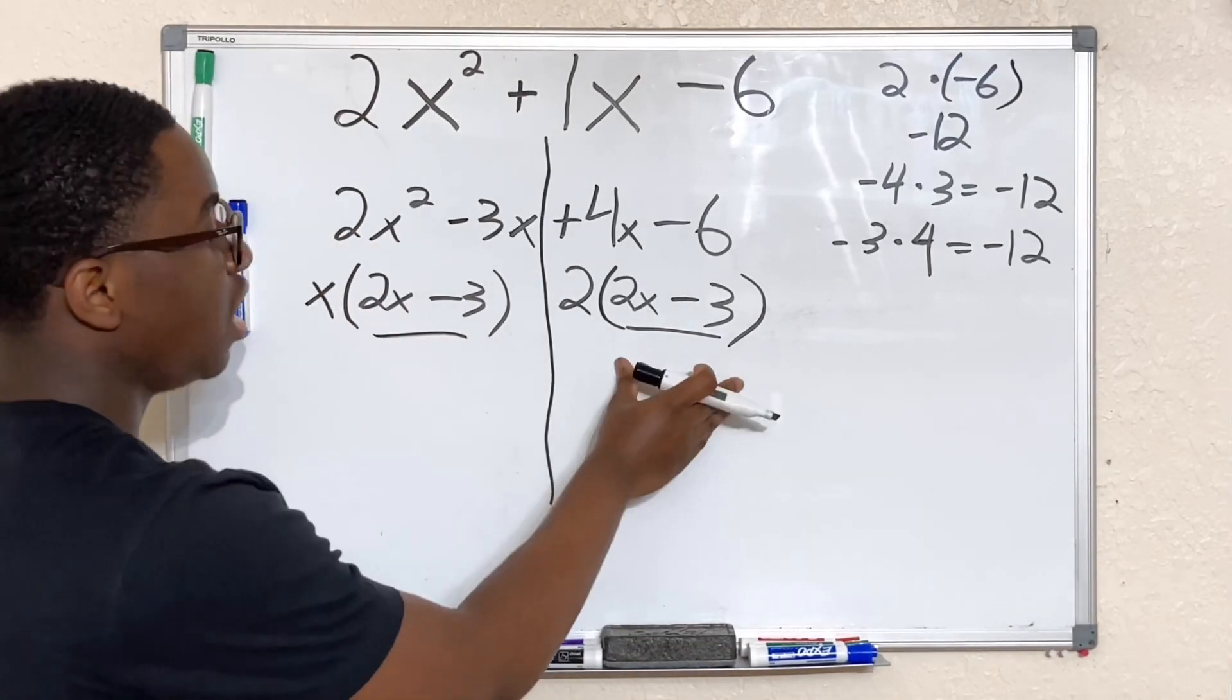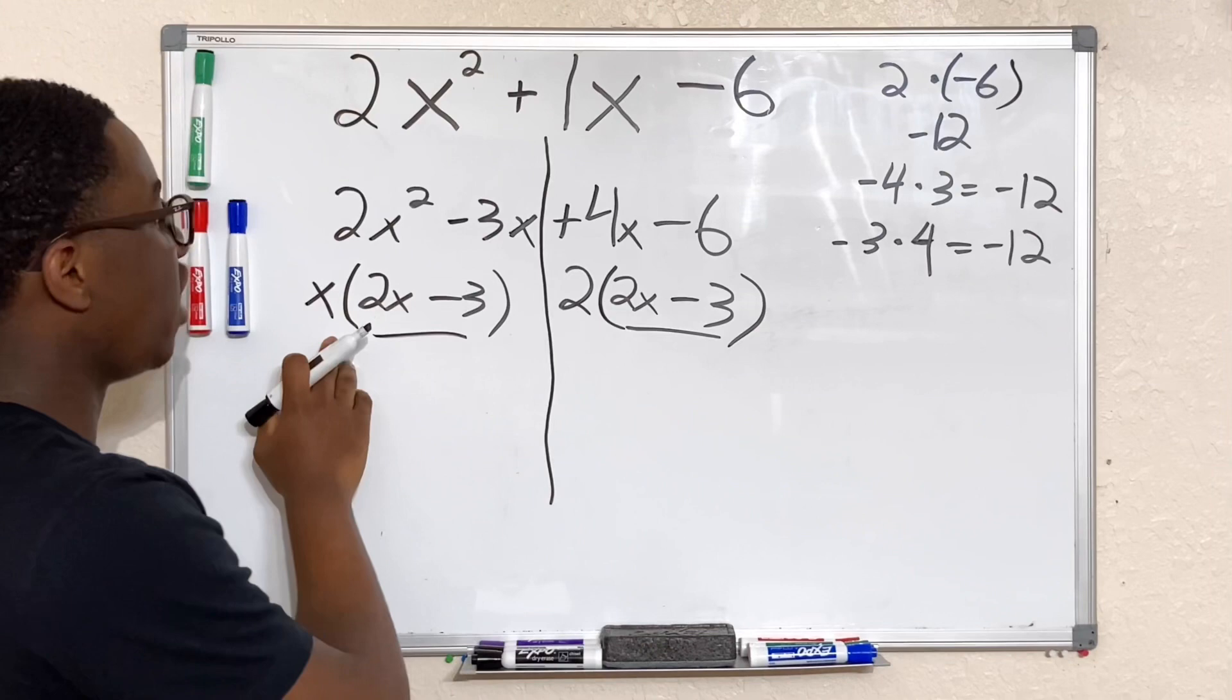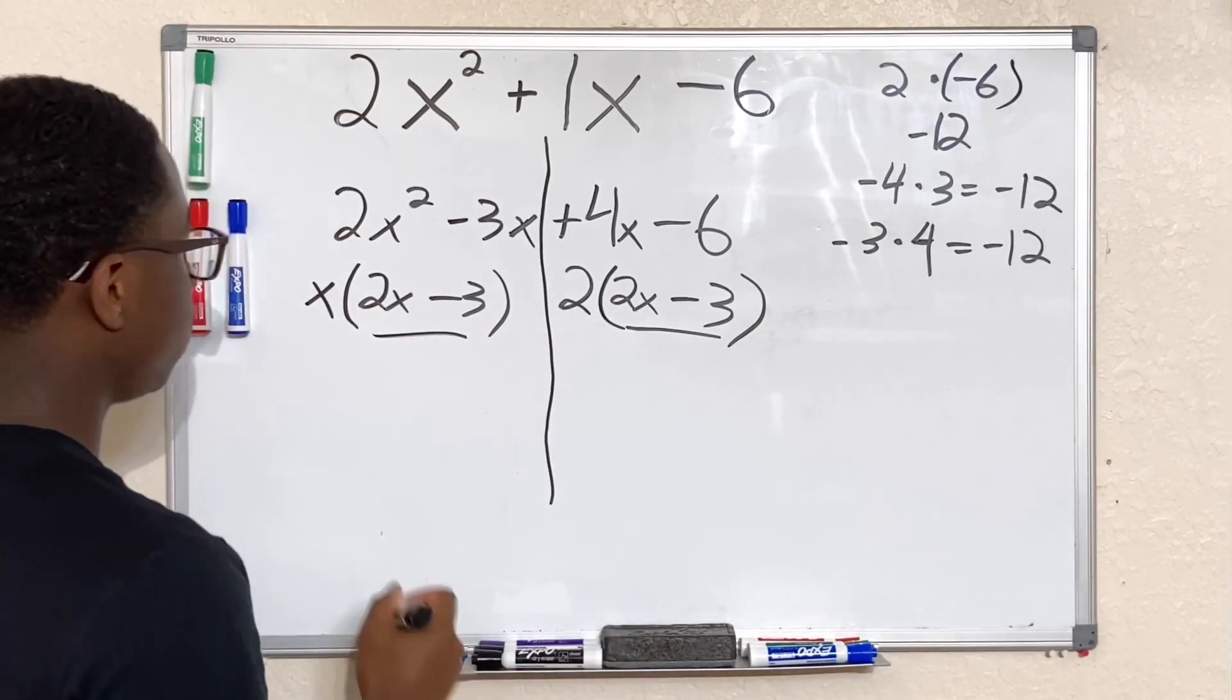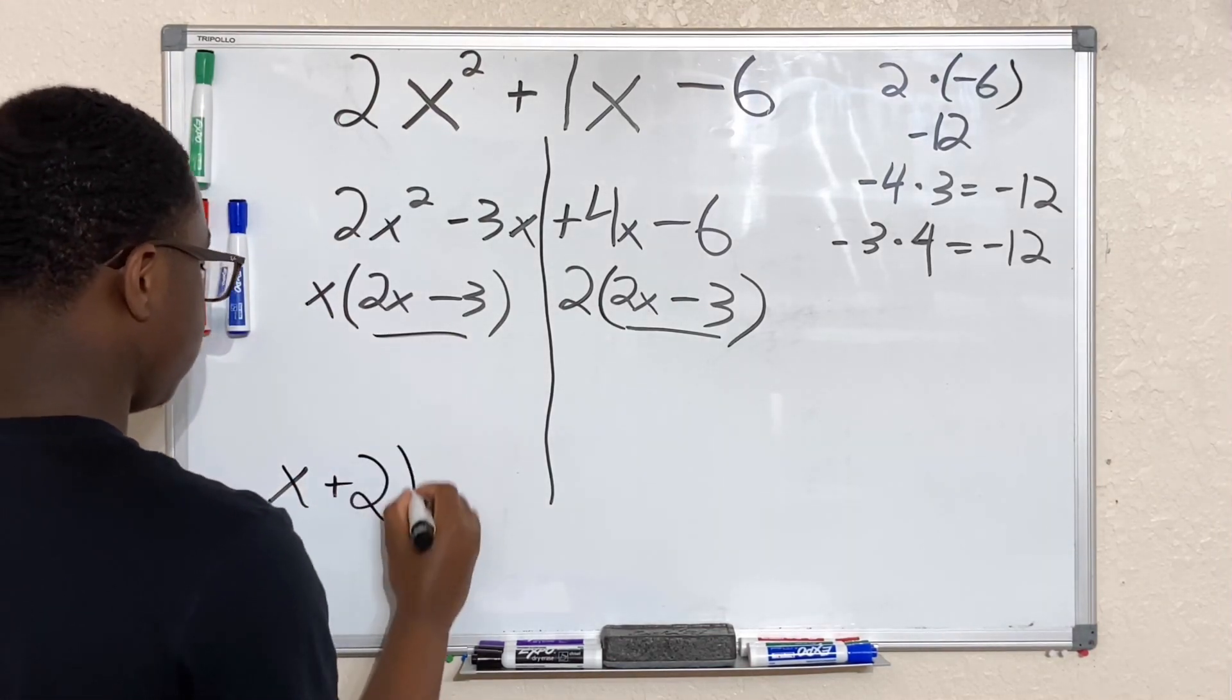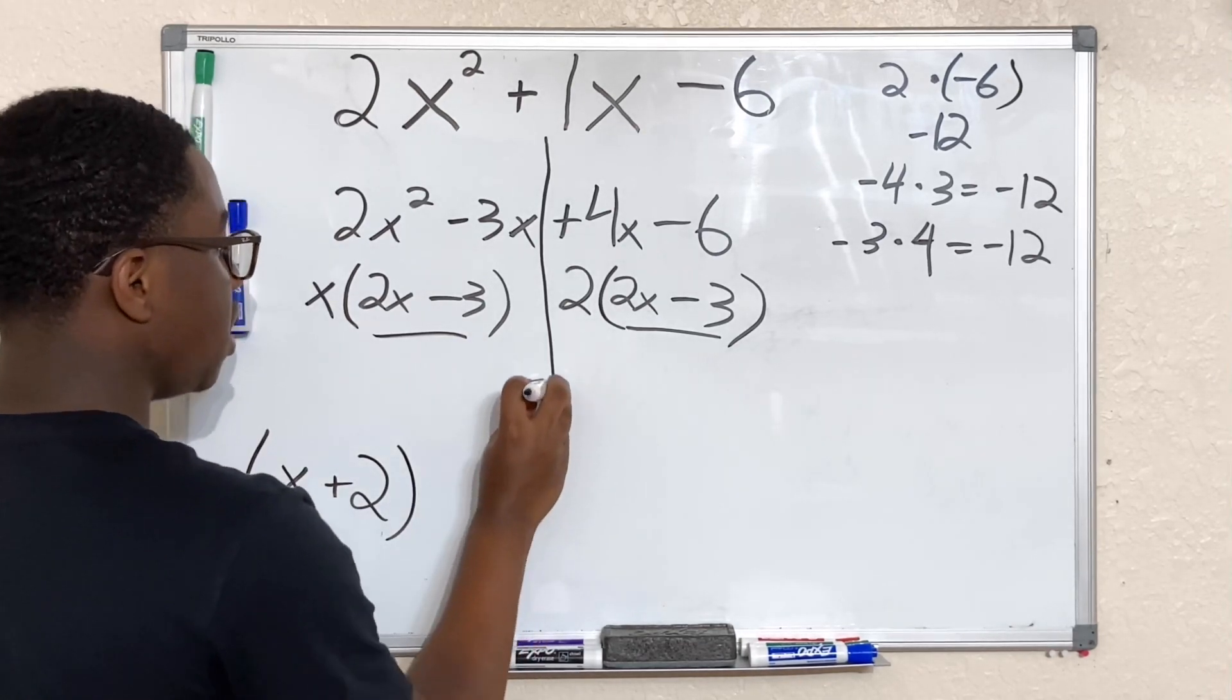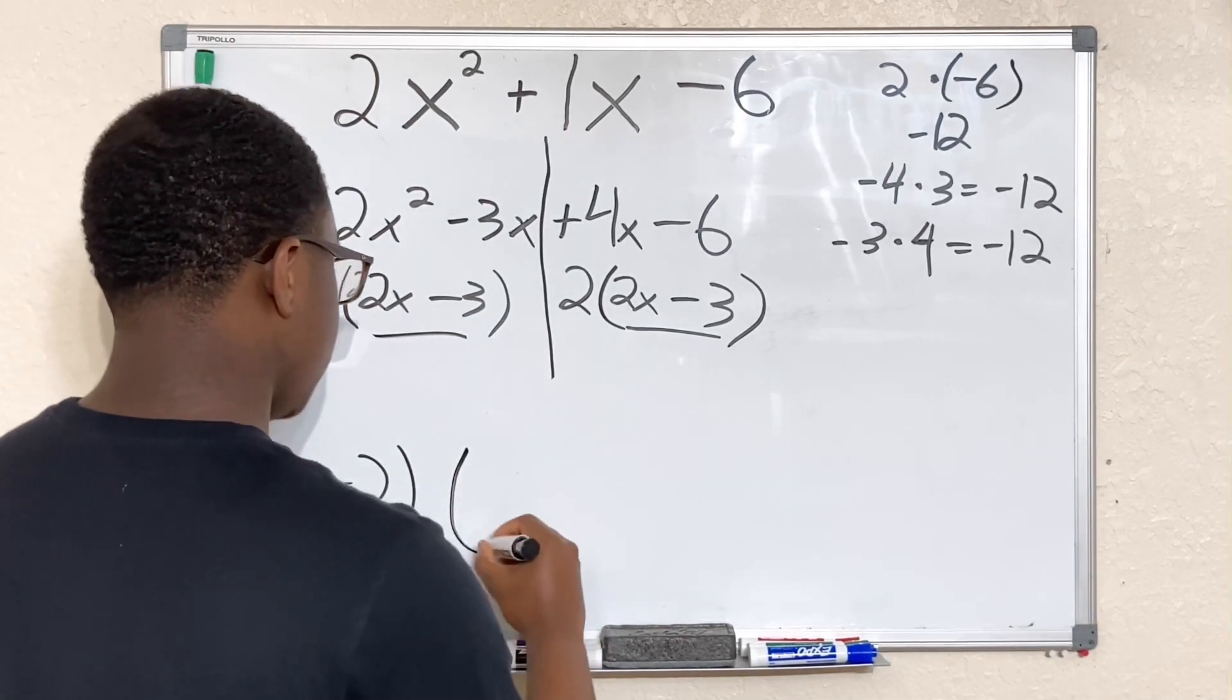Now all we have to do—this is going to be our second factor. Our first factor will be x and 2. So we could just write that as x plus 2 and write it here, x plus 2 in parentheses. Let's erase this to give us space.